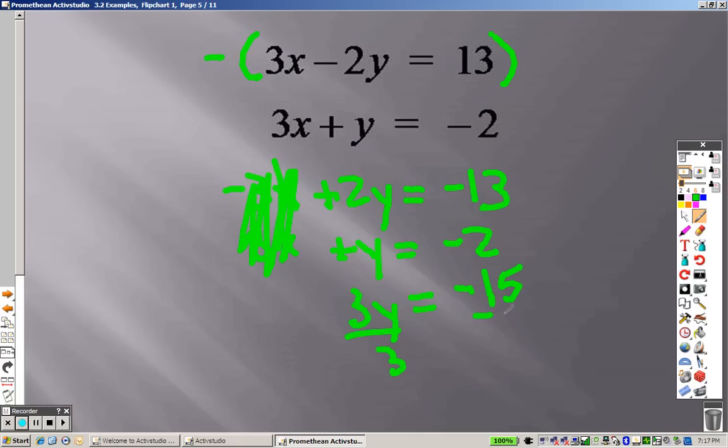I divide both sides by 3. And I get y equals negative 5. So if I plug that in here, 3x minus 5 equals negative 2. If I add 5 to both sides, I get 3x equals 3. Divide both sides by 3. x equals 1. So I get 1 negative 5 as a solution.